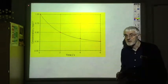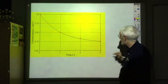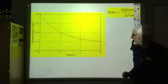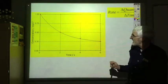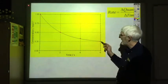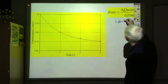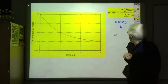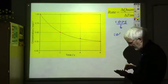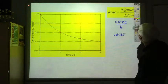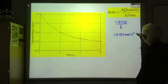At Higher, the graph might be of concentration against time, and again we'd use the equation rate equals change in quantity over change in time. If asked for the reaction rate over the first six seconds, and the concentration has changed from 1 to 0.25, the change in concentration is 0.75, so the rate is 0.75 divided by 6, which equals 0.125 moles per litre per second.